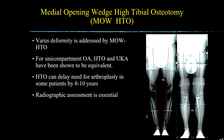Varus deformity is addressed by medial opening wedge HTO. This slide demonstrates images of a standing hip-to-ankle radiograph in a patient who underwent medial opening wedge HTO, including the pre-operative image on your left and the post-operative image on your right. The red line shows the weight-bearing axis, which is defined as a tangent passing from the center of the femoral head to the center of the tibiotalar joint. The pre-operative image confirms marked varus deformity, with the weight-bearing axis passing through the medial joint line. The post-operative image shows the weight-bearing axis has been shifted to a neutral position, offloading the medial compartment.